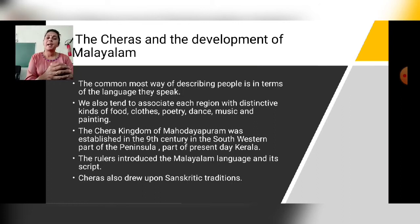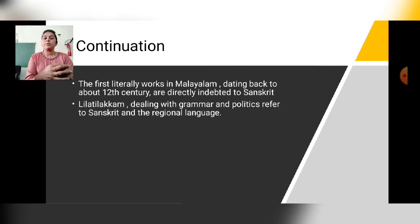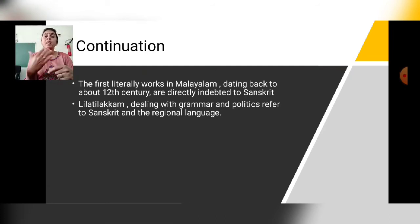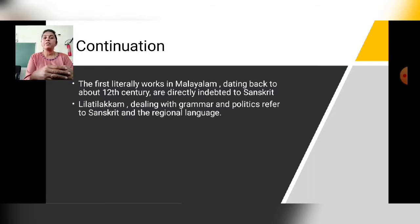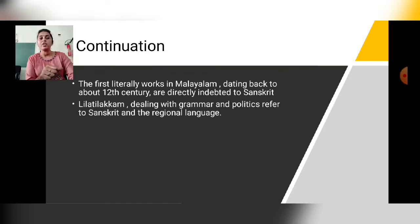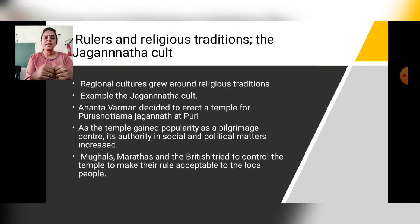The Cheras also drew upon Sanskritic traditions. The first literary work in Malayalam dates back to about the 12th century and was directly indebted to Sanskrit. Leela Tilakam, a work dealing with grammar and poetics, referred to both Sanskrit and the regional language, Malayalam.